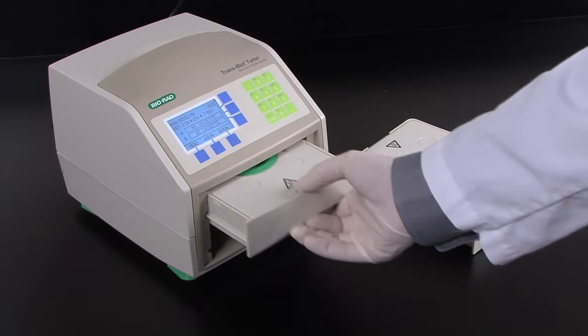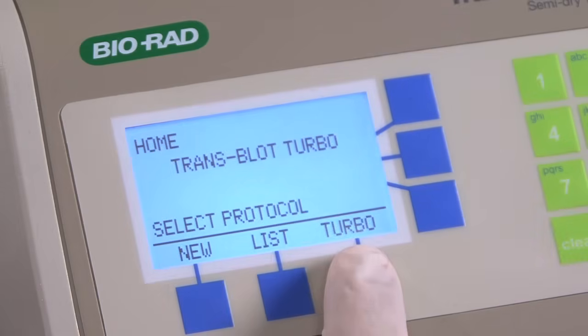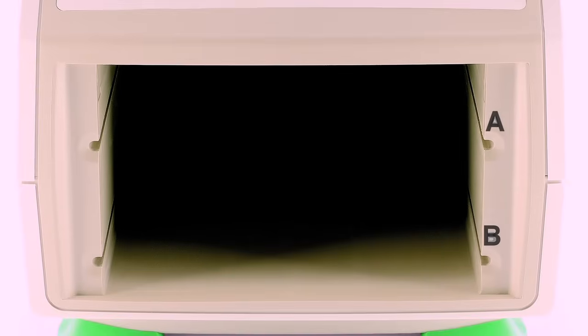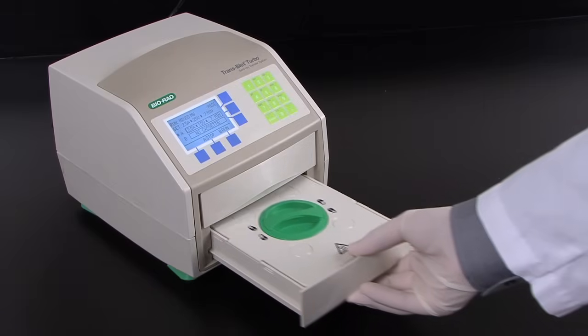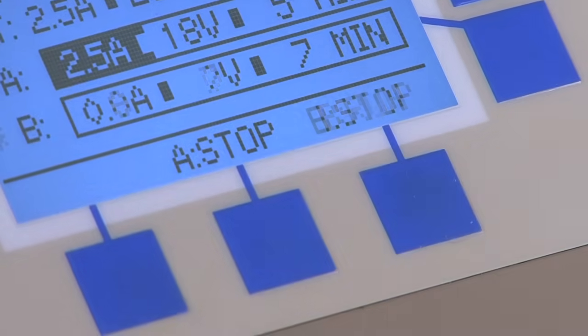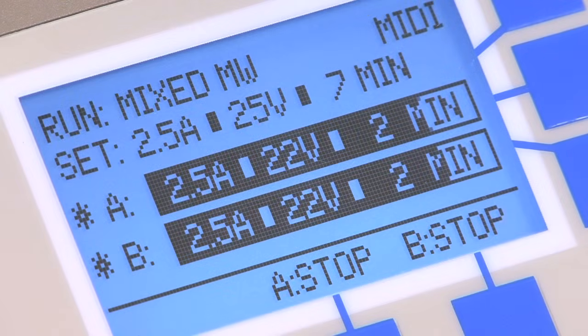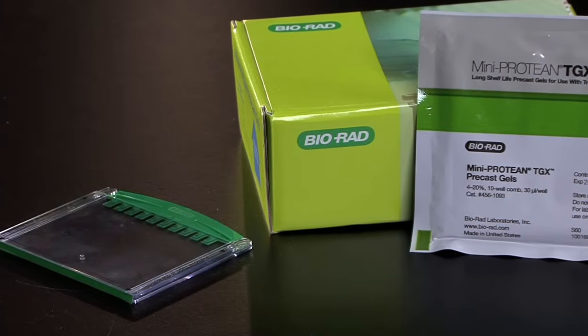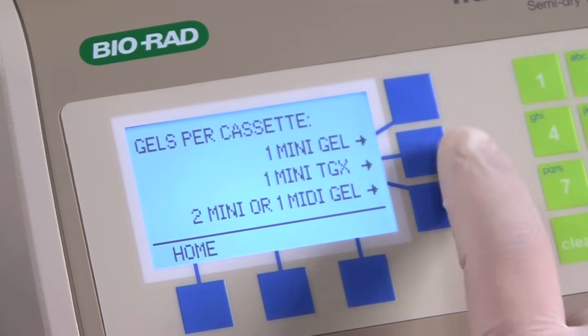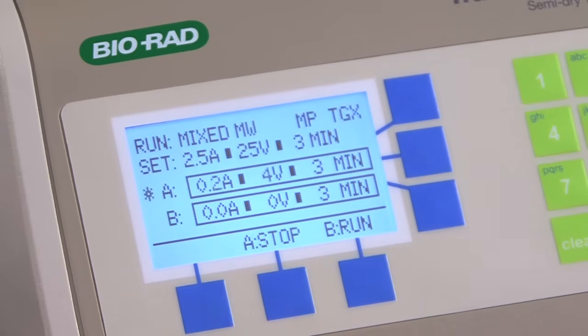Once the cassette has been inserted into the instrument, you can quickly access the turbo protocols for a 7-minute rapid transfer. The top and bottom bays, called A and B, are independently controlled. So you can set up and start one transfer, then start the other bay whenever you are ready. In the run screen, a countdown timer as well as real-time voltage and amperage conditions are displayed. If you are using Biorad Mini Protein TGX gels, you can use the TGX Turbo protocol that provides efficient transfer of one mini TGX gel per cassette in 3 minutes.